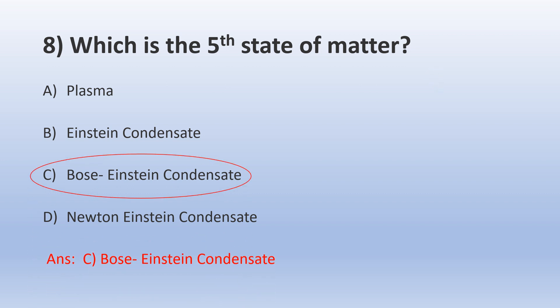The correct answer is C, Bose-Einstein Condensate. Students, we all know that there are three states of matter: solid, liquid, and gas. Scientists have now discovered two more states. So the fourth state of matter is plasma. Plasma is a superheated matter so hot that the electrons are ripped away from the atoms forming an ionized gas. The fifth state of matter is Bose-Einstein Condensate. It's a group of atoms cooled to absolute temperature, that is minus 273 Kelvin.